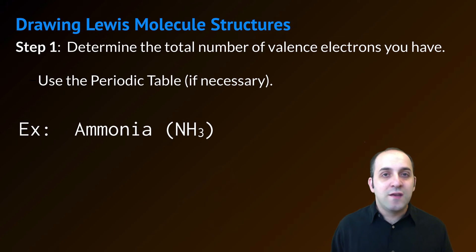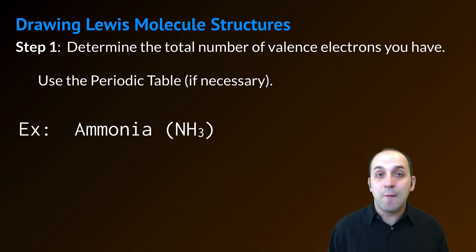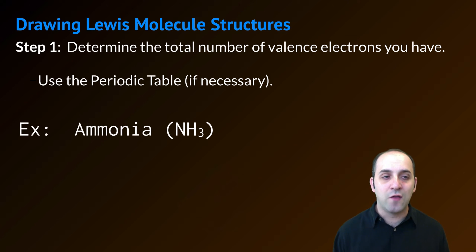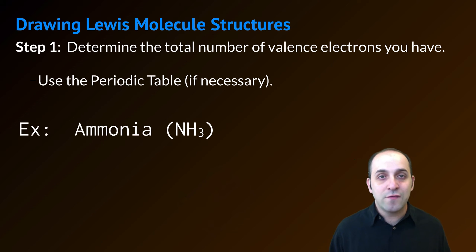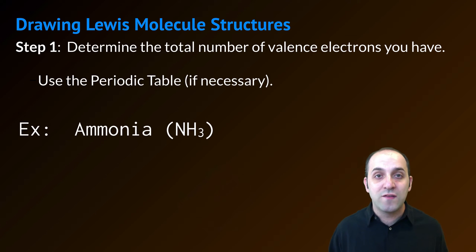You are going to need to be able to draw Lewis structures of molecules as well, and these are the steps that I would suggest that you follow. In step one you're going to determine the total number of valence electrons that you have. In case you ever forget about an atom's number of valence electrons, remember that you can always get this off of the periodic table.